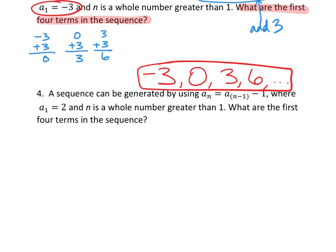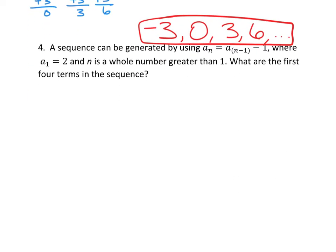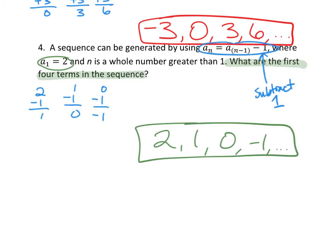Number 4 is completely yours — what are the first four terms in the sequence? We know the first term is 2, since a sub 1 equals 2. The formula says take the one before it and subtract 1. So: 2 minus 1 is 1, 1 minus 1 is 0, 0 minus 1 is negative 1. The pattern would continue if we were asked for 5 or 6 terms, but we can keep going since we know how the sequence works.